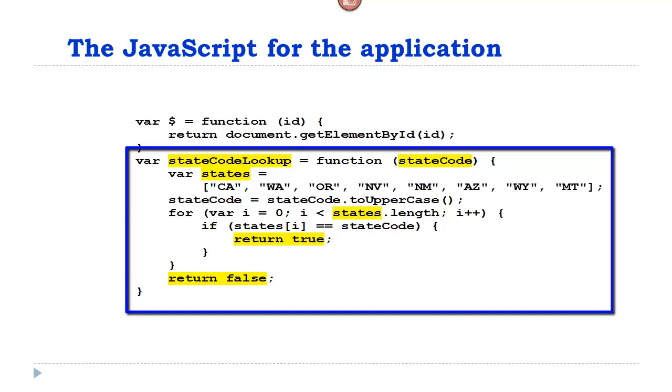Now what the author is doing in the next screen here, he is creating a function to determine if the user entered the correct state code. So the user enters a state code, and when they click the button, it's going to call this function. And the name of the function is stored in the variable called state code lookup. Now these are the allowable states, California, Washington, Oregon, Nevada, etc.